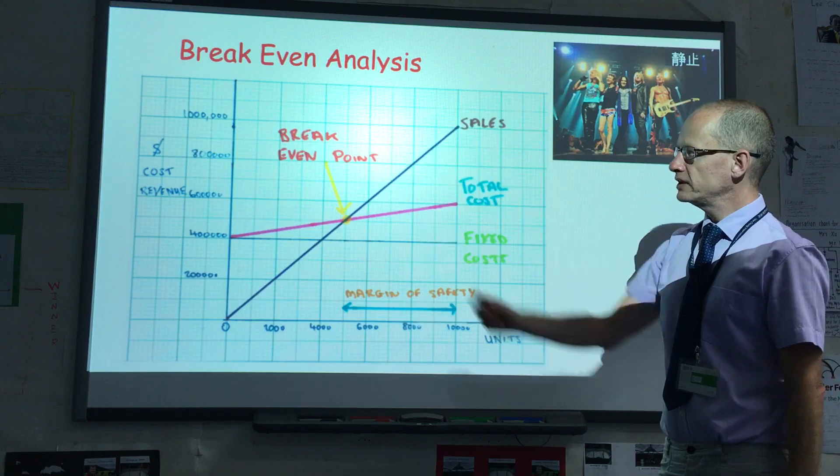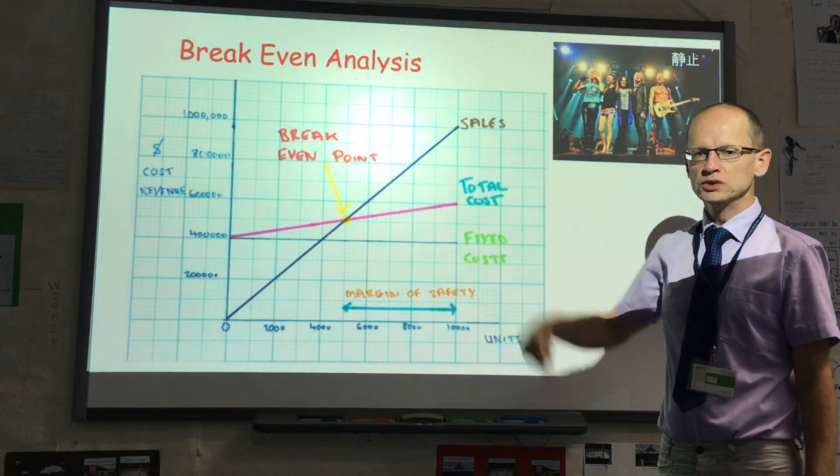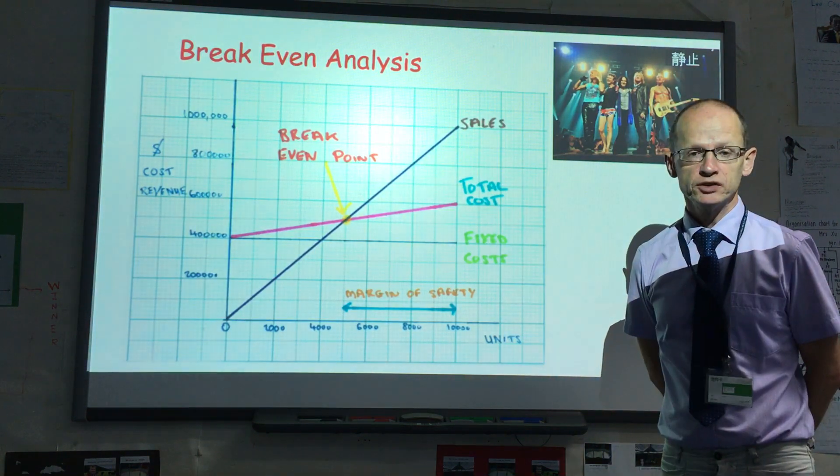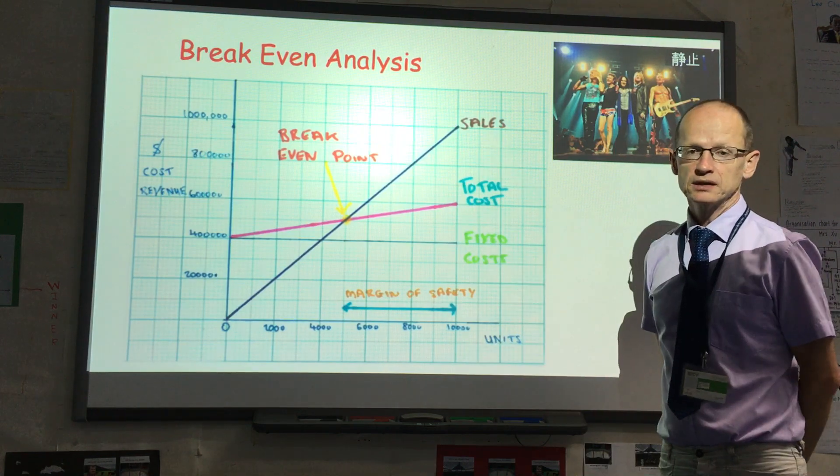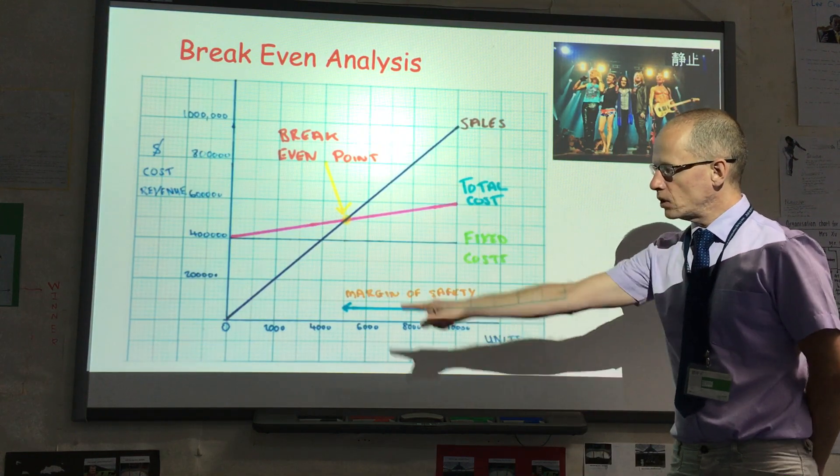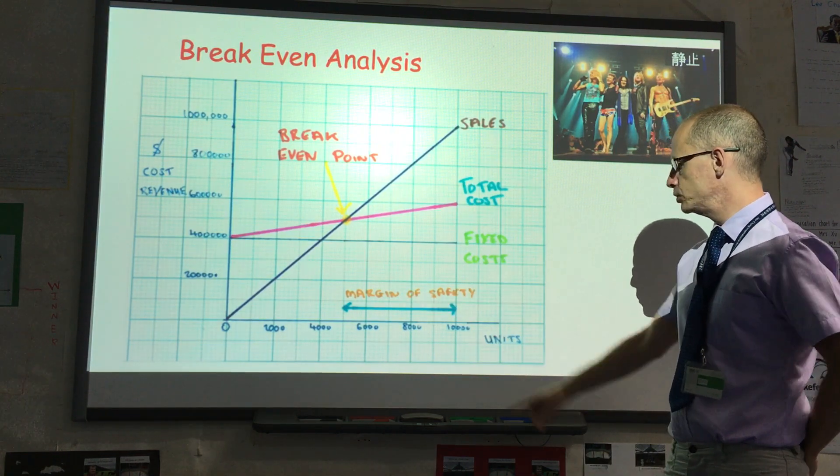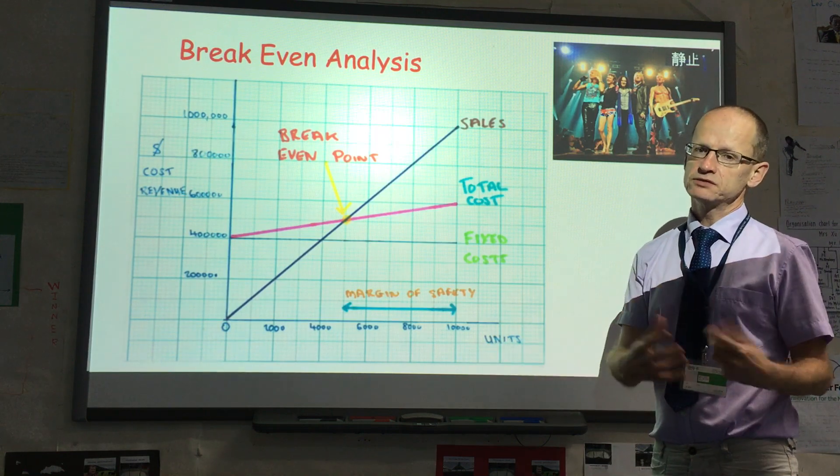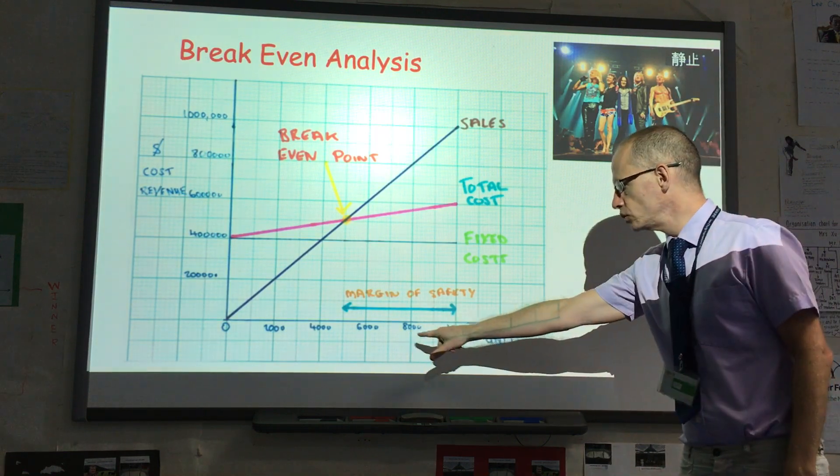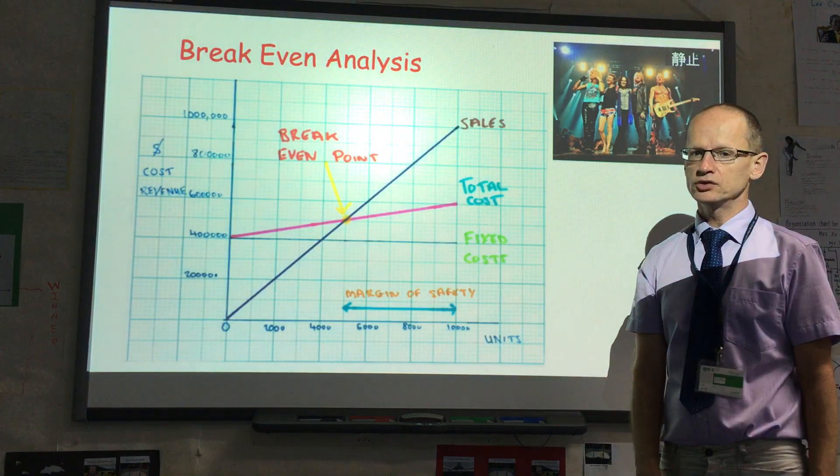So I have drawn the axis. On the vertical axis you will see the cost and revenue, I've labeled that in dollars, and on the horizontal axis I have units, or in this case for a concert would be tickets, and I have drawn that all the way up to 10,000.